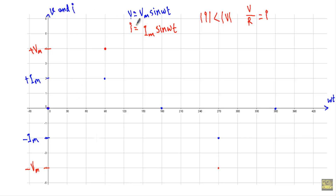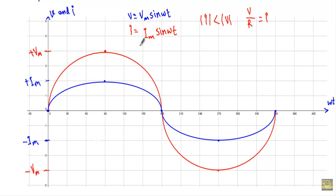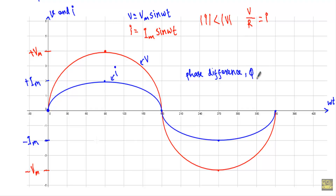Drawing the waveforms of alternating voltage V and alternating current I together, and looking at their origins, you will see that the origin of V and I are at the same point. Therefore, the phase difference between the two waveforms is equal to zero degrees. That means our voltage V and current I will be in phase — they attain their positive maximum, zero, and negative maximum at the same instant.